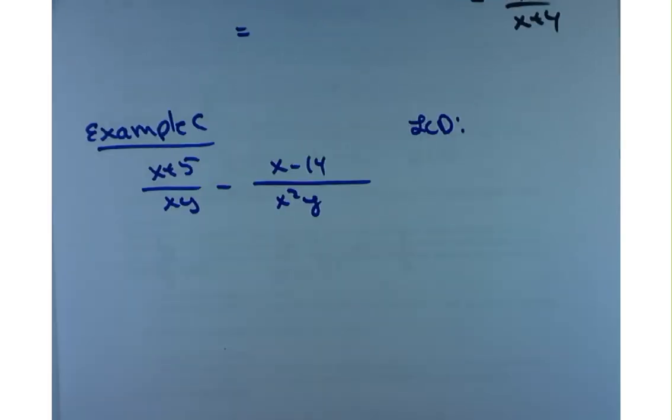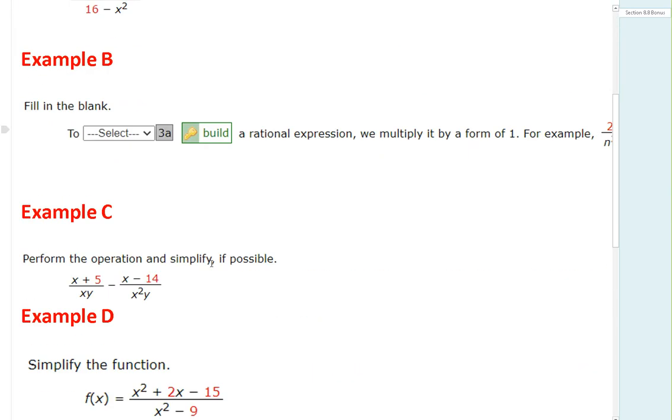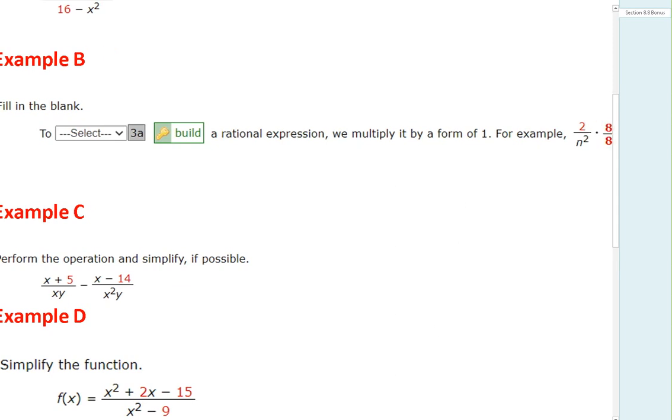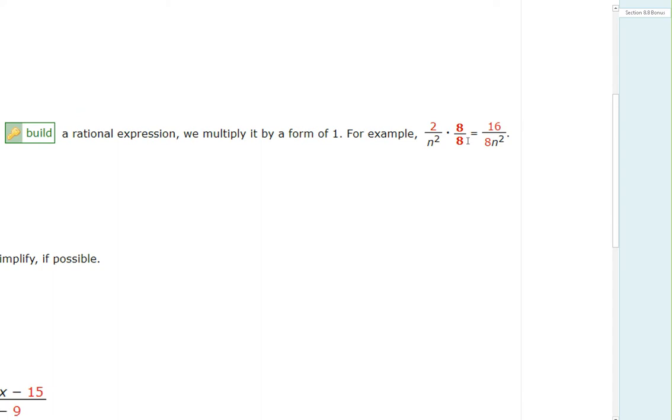Example C here. Well, actually, I think there's another giveaway points that I want to do here. Example B says to build a rational expression. So that's the word that they're looking for there. To build a rational expression and multiply by a number over itself. Now, I had a question earlier about, well, when do you multiply by a number over itself and when do you multiply by just the number of the numerator?